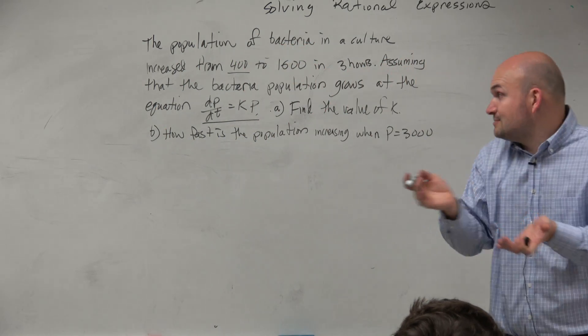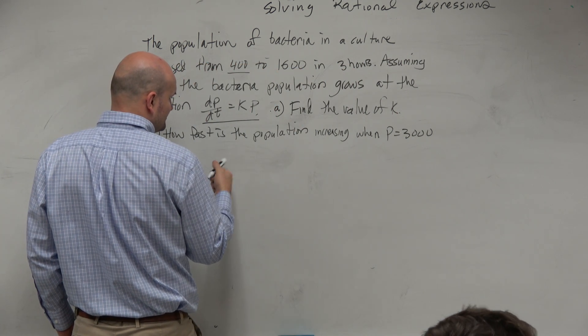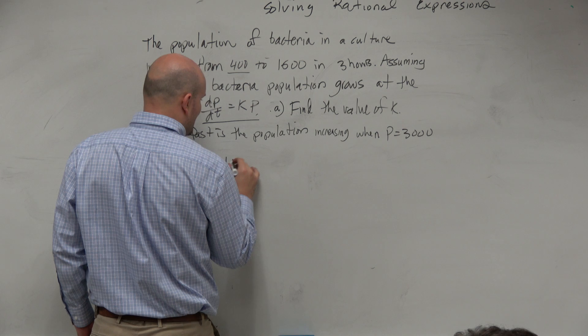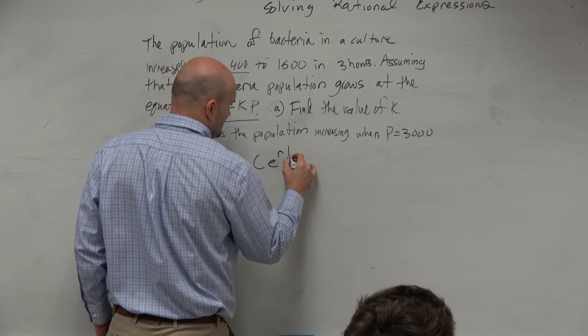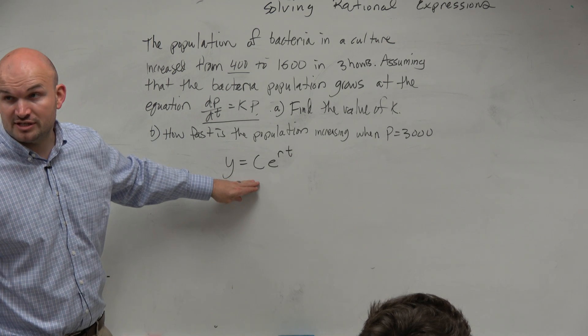First of all, we see the rate is proportionality, right? So automatically, I can say that y is equal to c times e to the rt. Right when I see this rate of proportionality, I can go to this equation.